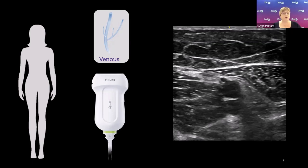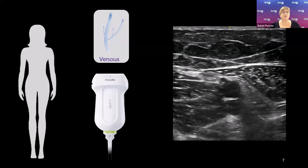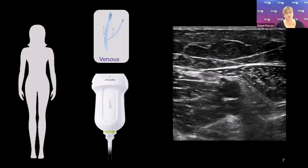Choose a vascular or venous preset. In the background this tweaks gain and dynamic range to enhance vessel walls as white and the lumen as black, and makes colour parameters more sensitive to the low flow seen in the venous system. With a linear probe the field of view is rectangular; I prefer to keep it in that linear rectangular shape rather than using extended trapezoid views.